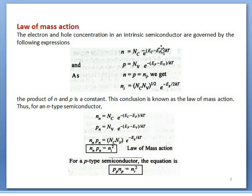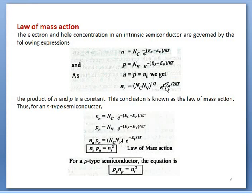Since in intrinsic semiconductor the number of electrons equals the number of holes, both can be equated and represented by a common term Ni, where subscript i represents the intrinsic nature. When we multiply N and P, we have Nc, Nv and an exponential term. The Fermi terms cancel out and we have exponential of minus (Ec minus Ev) upon KT. In other words, Ec minus Ev equals Eg.